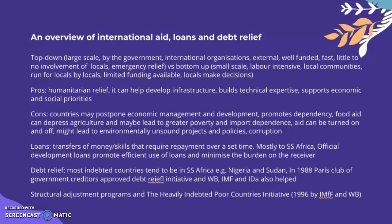Now looking at an overview of international aid, loans, and debt relief. There are two types of international aid: top-down — large-scale, by governments and international organizations, external, well-funded, fast, with little local involvement, for emergency relief — and bottom-up — small-scale, labor-intensive, community-run, for locals by locals, with limited funding. Pros of international aid include humanitarian relief, infrastructure development, technical expertise, and supporting economic priorities. Cons include dependency, food aid depressing local agriculture, import dependence, aid being turned on and off, environmentally unsound projects, and risk of corruption.